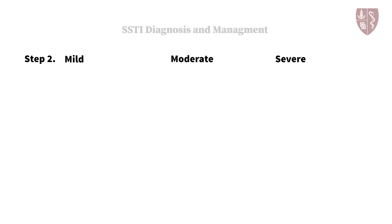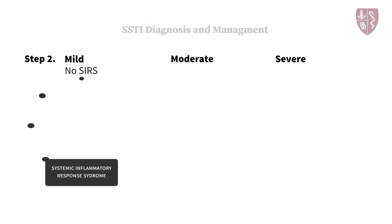Next, clinicians must determine if their patient has mild, moderate, or severe disease. Patients without signs to suggest a systemic inflammatory response qualify as having mild infection. The majority of skin and soft tissue infections in the U.S. are mild and can be treated in an outpatient clinic.